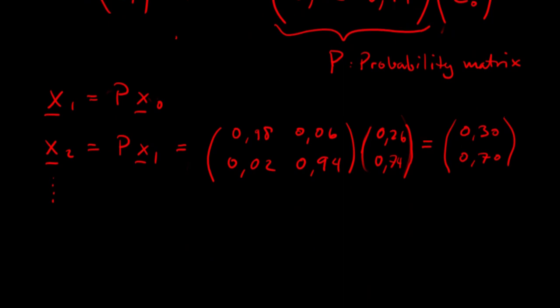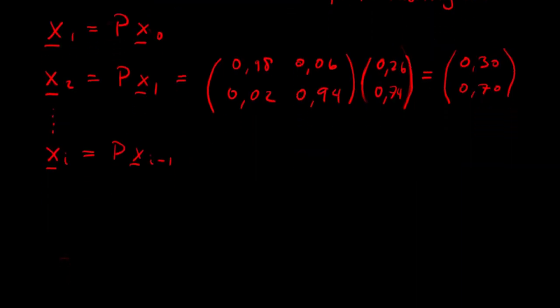So if we are continuing this, we can write a general yearly population vector like this. The previous year is inputted and multiplied with the probability matrix. And that gives us this current year's population. And it can be shown for such positive matrices like this, that there is a stable solution.